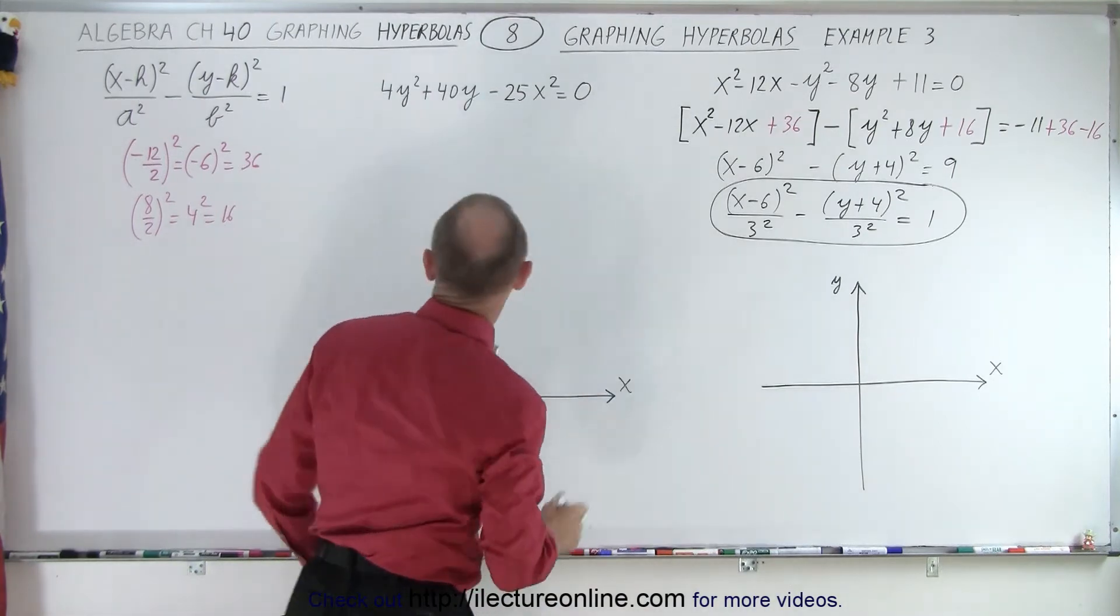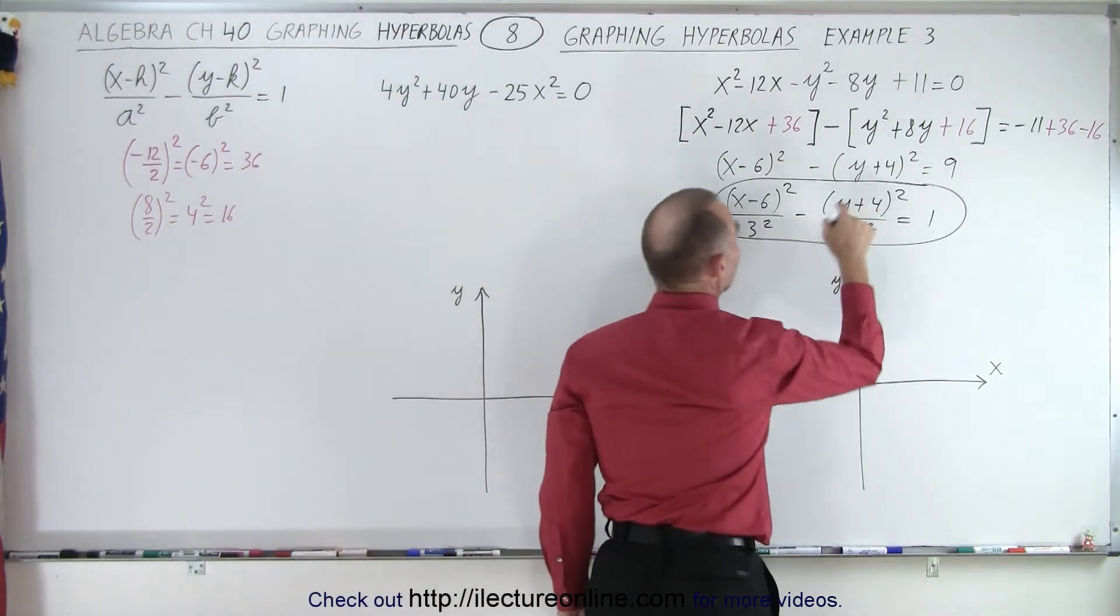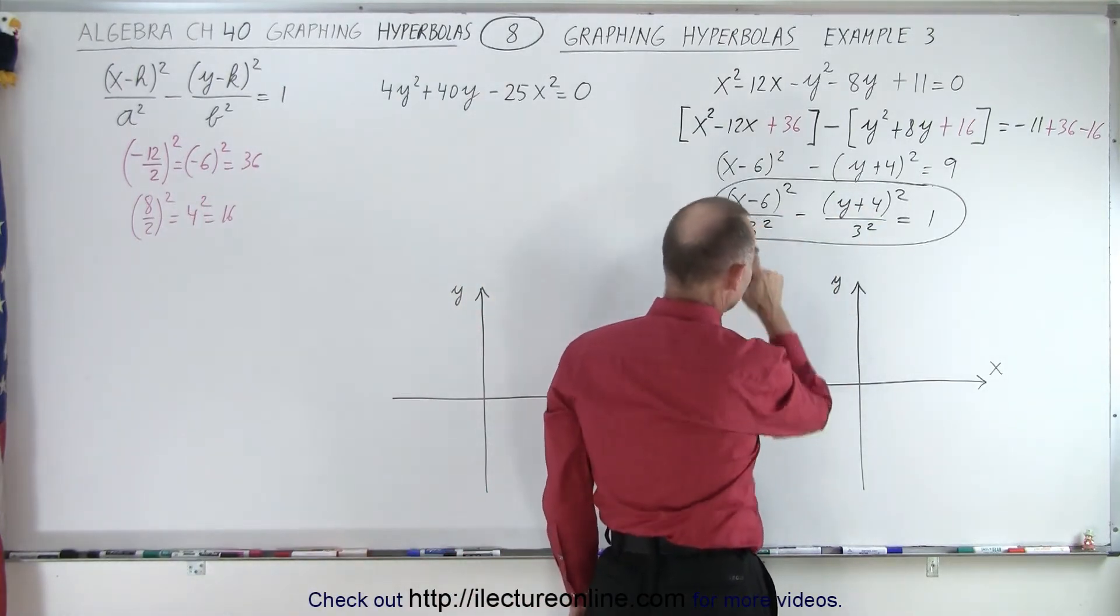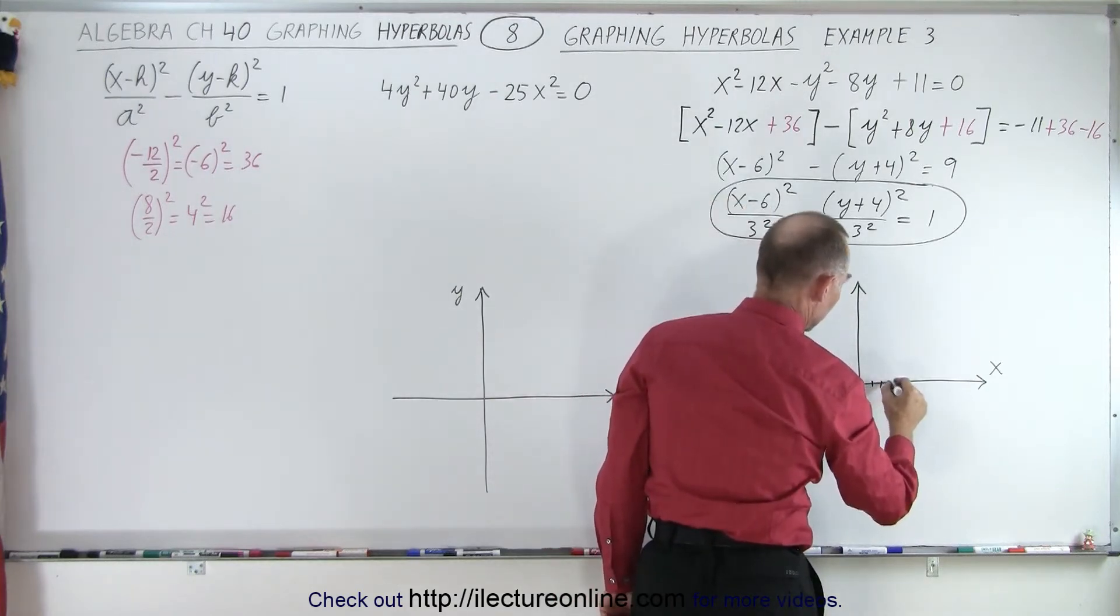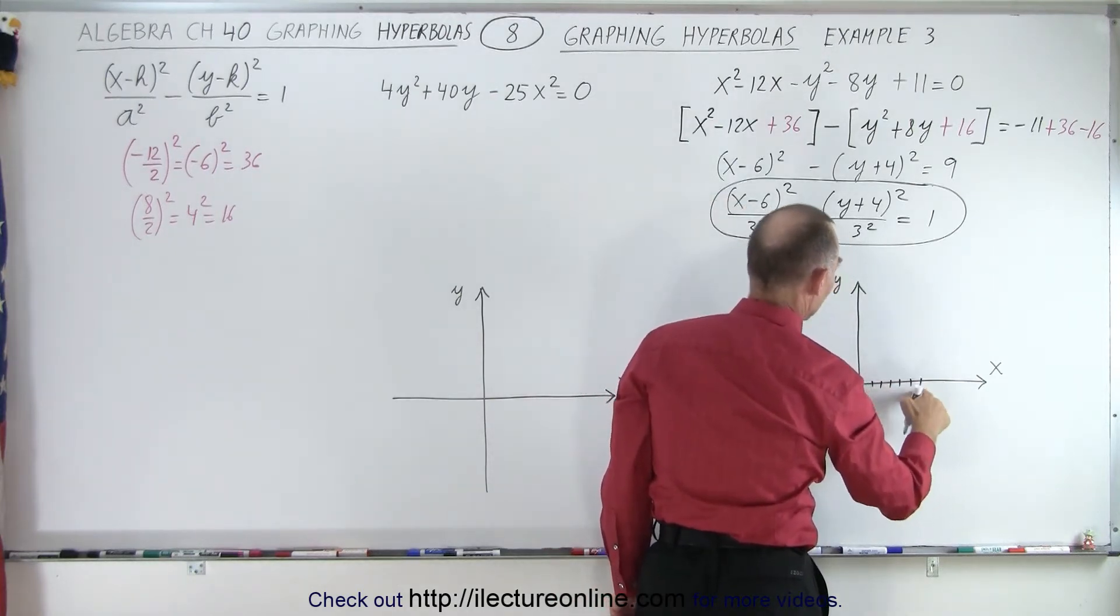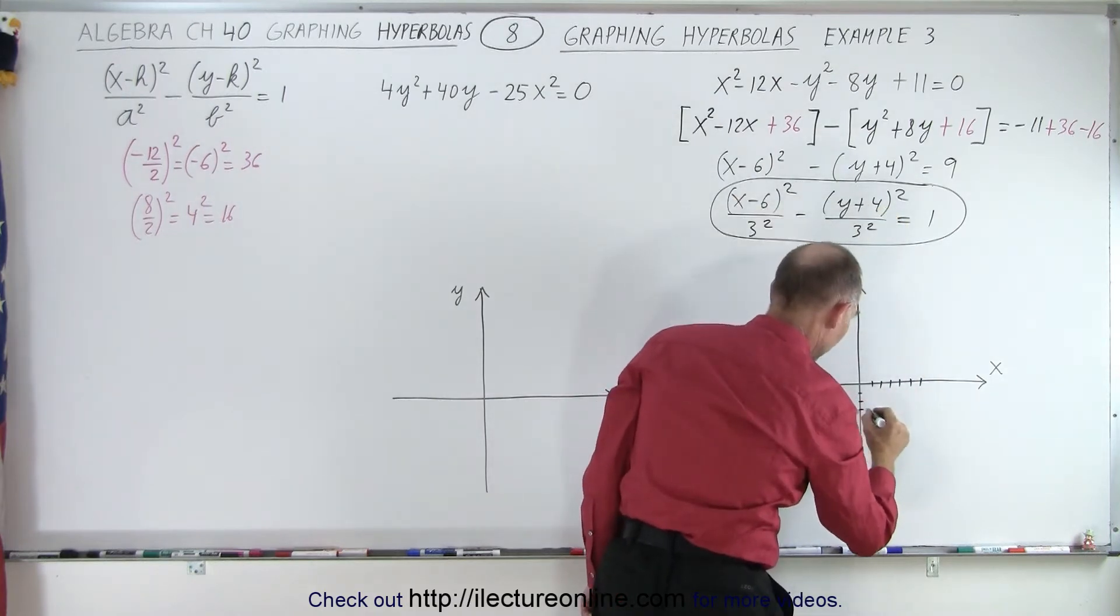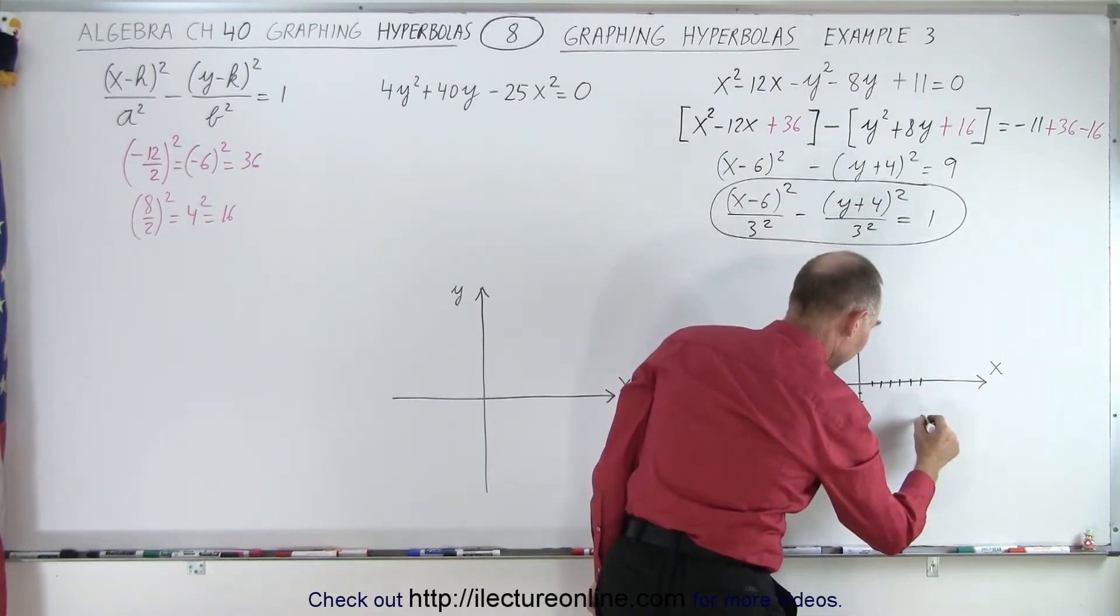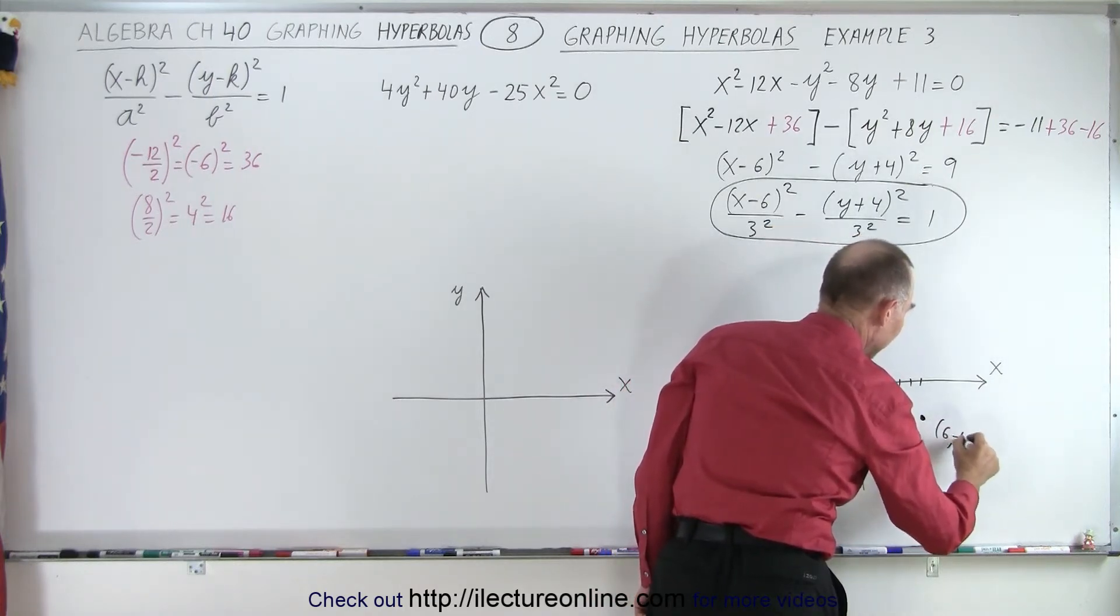Let's go ahead and graph it. First of all, we realize we have an offset h and k are 6 and negative 4. So in the x direction, we're shifted to the right by 6, and in the y direction, we shifted down 4. So right here is the center of the hyperbola at 6, negative 4.